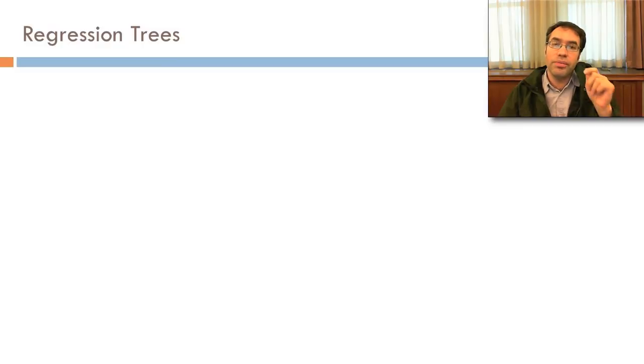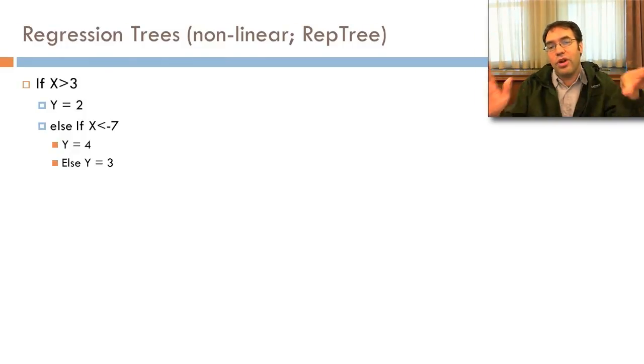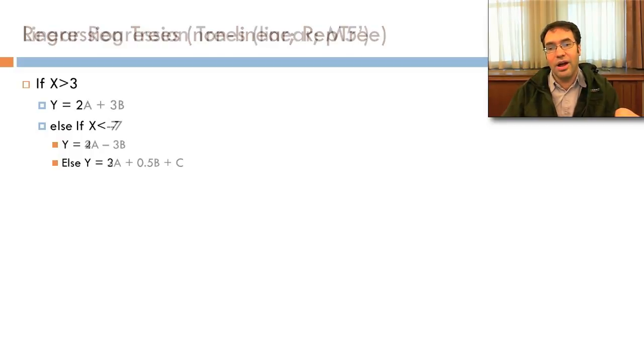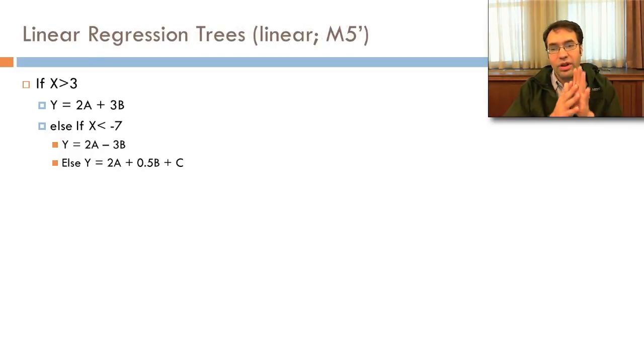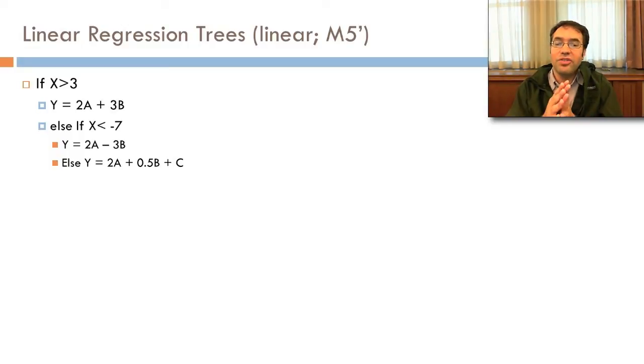There are other kinds of regression beyond linear regression. There's regression trees. I tend to like that. There's nonlinear regression trees where, for example, if x is greater than 3, y is 2. But if x is less than negative 7, y is 4, else y is 3. This can capture nonlinear relationships. There's another type of regression trees, M5 prime, where you actually have linear equations at each of the leaves of the tree. So if x is greater than 3, y is 2a plus 3b. But if x is less than negative 7, y is 2a minus 3b, and so on. And what this allows you to do is to say that there are different linear relationships between some variables depending on other variables.